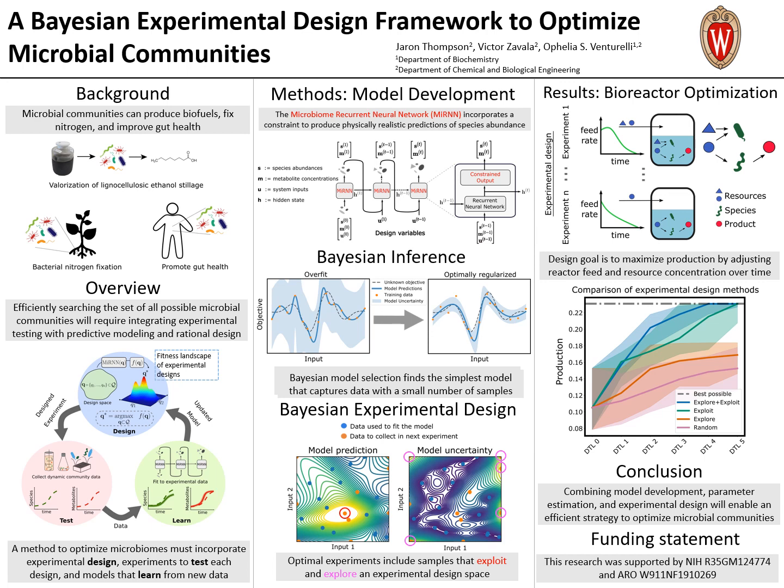In order to train flexible machine learning models to a small number of noisy observations, we use a Bayesian model selection algorithm that optimizes the degree of regularization to seek the simplest model that explains the training data. Additionally, Bayesian inference provides a principled approach to quantify uncertainty in model predictions, and provides a variety of models that can be used to guide the design of future experiments.